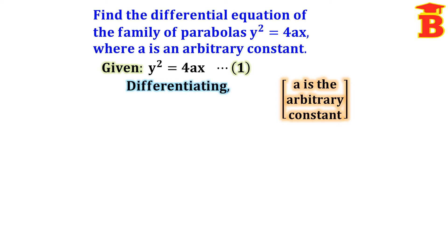Differentiating this: y squared gives 2y times dy/dx, equal to the right-hand side 4a times the derivative of x, which is 1, so we write 4a. That is all — we have differentiated one time.